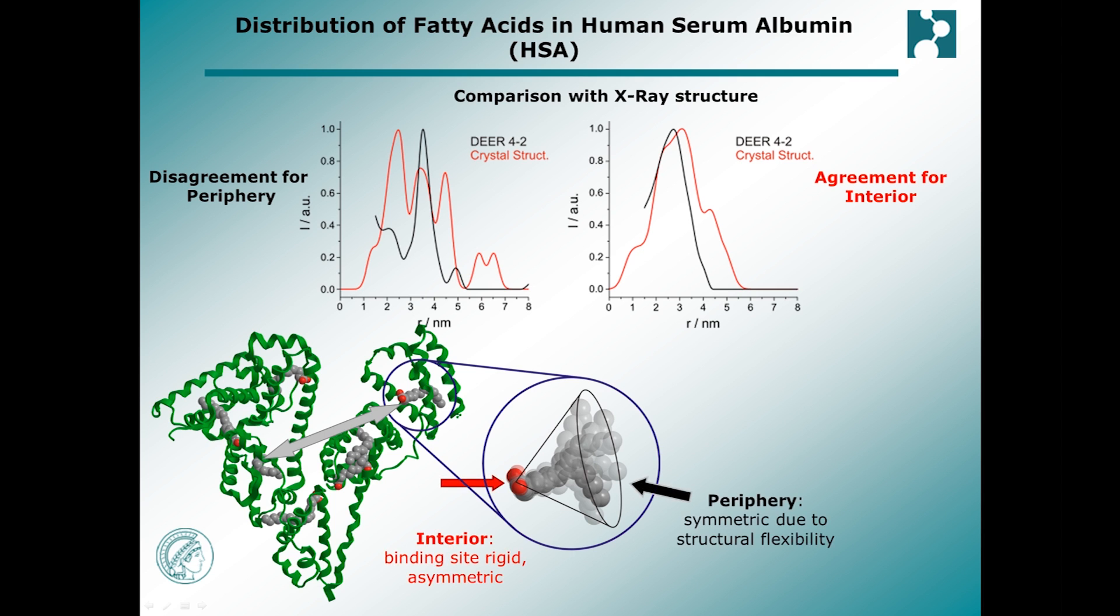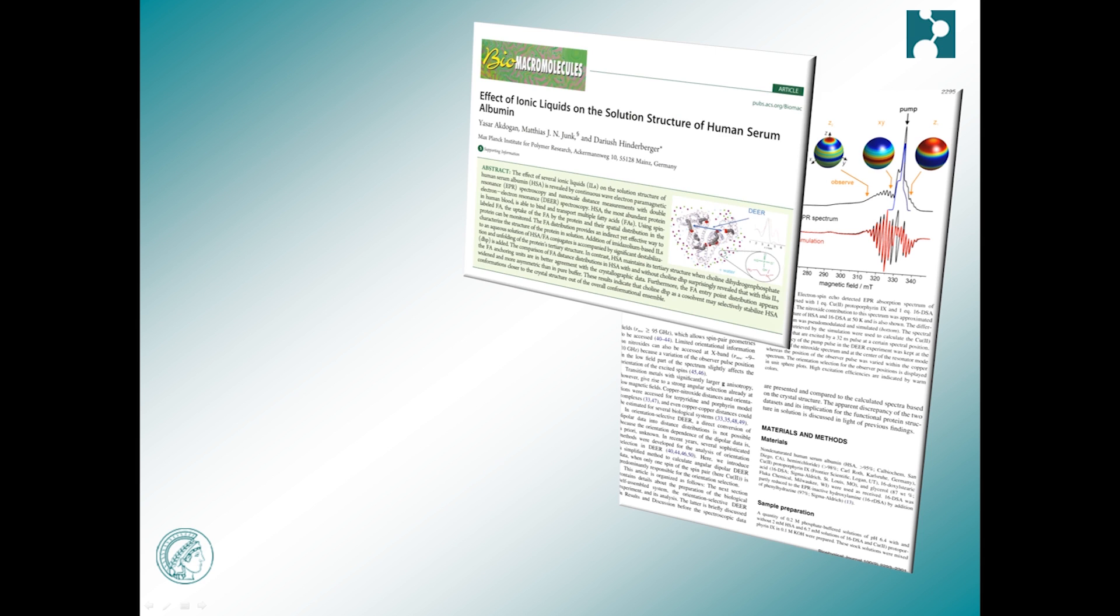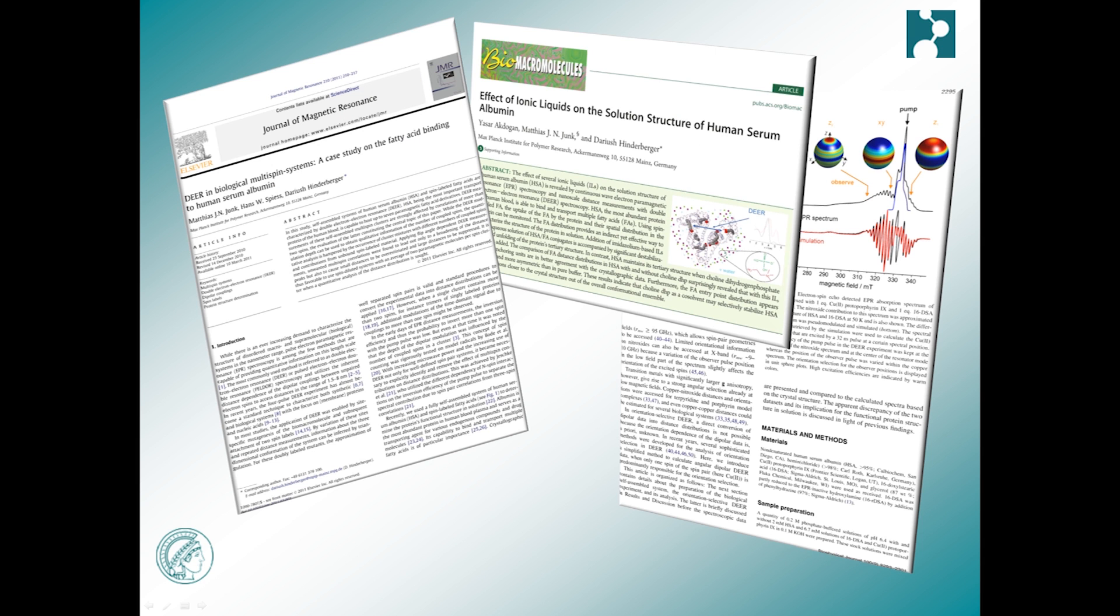This symmetric distribution is a result of conformational flexibility at the surface of the protein. It provides a straightforward explanation for the transport function of the protein as it facilitates fast uptake and release of multiple fatty acids. Several publications in high rank journals have resulted from this study.